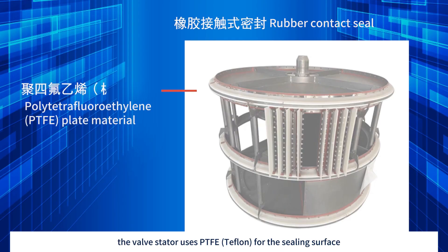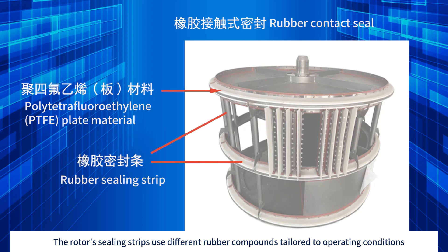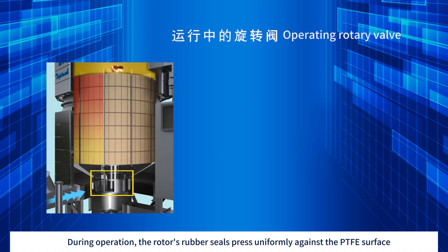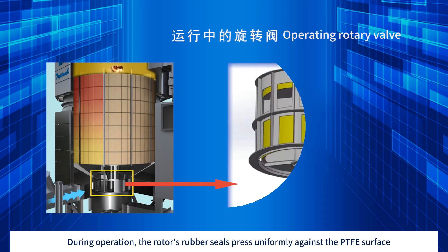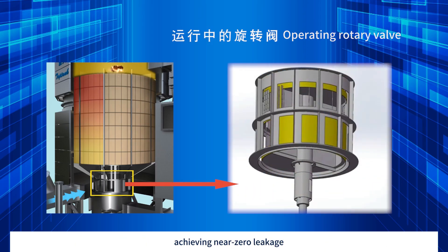With rubber contact sealing, the valve stator uses PTFE Teflon for the sealing surface. The rotor's sealing strips use different rubber compounds tailored to operating conditions. During operation, the rotor's rubber seals press uniformly against the PTFE surface, achieving near-zero leakage.